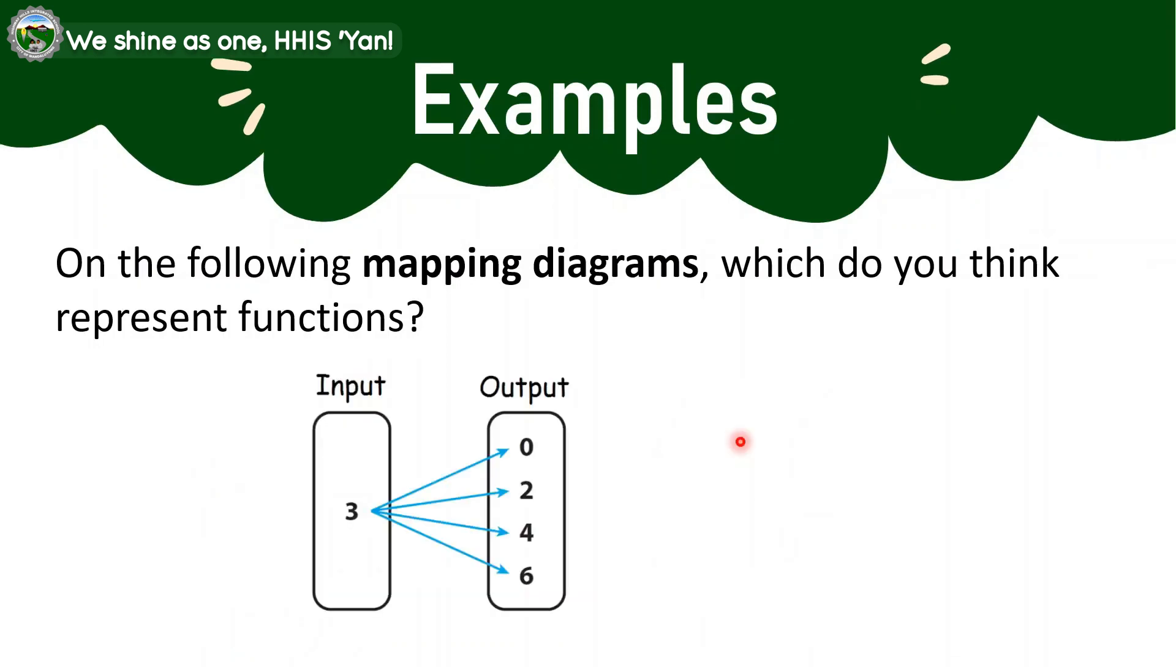Last example under mapping diagrams. So if you try to see it, our tree in the input is matched to many elements in our output: the 0, 2, 4, and 6. So this is showing us a one-to-many relationship. And a one-to-many relationship is not a function. So when we were given mapping diagrams, what are considered as functions only are the relationships one-to-one and many-to-one. Again, the one-to-many is not a function.